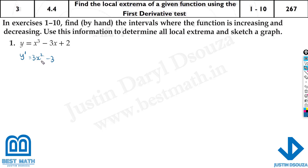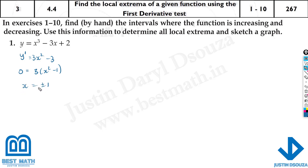Then what we do is find the critical numbers by making this equal to 0. Taking 3 as a common factor gives x squared minus 1, so x is equal to plus or minus 1. These are the critical numbers.